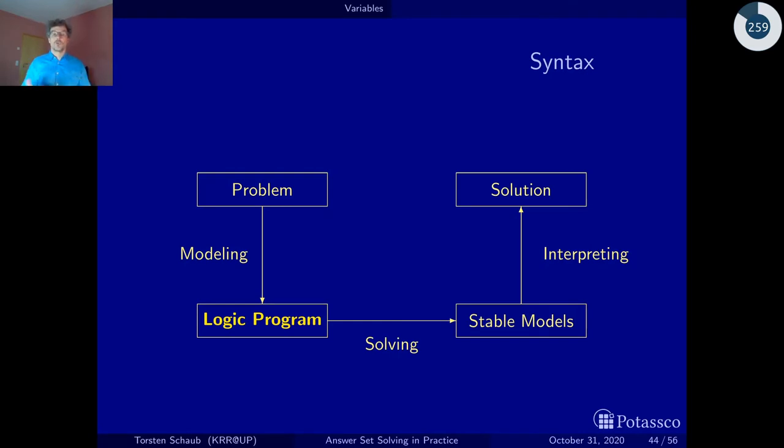Now, first of all, we will look at logic programs that contain rules with variables, and I'll try to explain you what such rules stand for. So once we have done that, then we actually have to revisit even the semantics of that, but you will see that this is actually a pretty easy task, as once we have clarified what the rules with variables stand for, because then mapping this on semantics is straightforward.